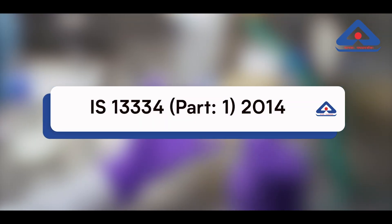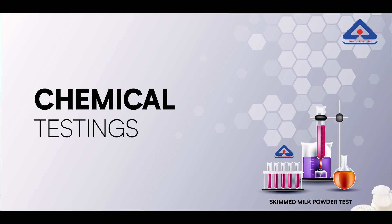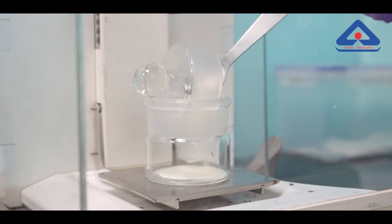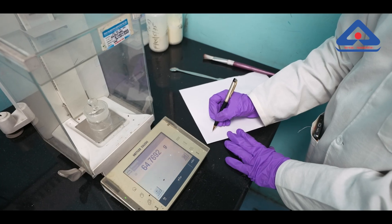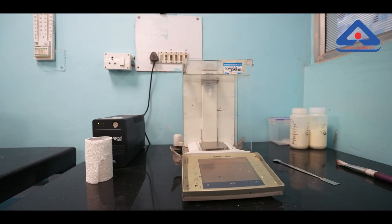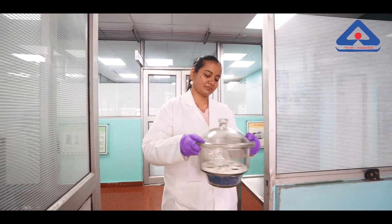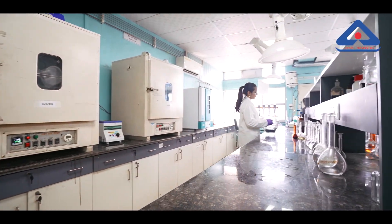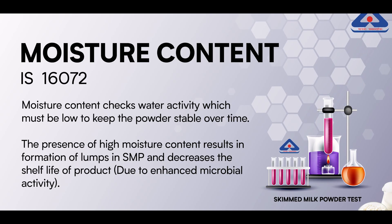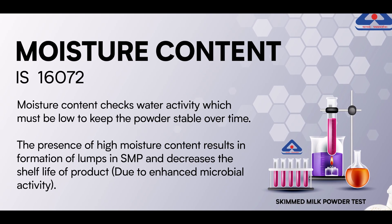Chemical test: Lab analysts carefully measure a precise quantity of the SMP sample using advanced measuring equipment. This sample is then taken to the chemical lab where the testing process begins. Number one: Moisture content, IS 1607.